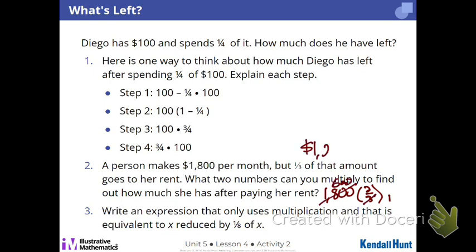I can cross-simplify three out of both those. $600 times two is $1,200. That's how much money is left over. How much must your rent be? $600. $600 a month.